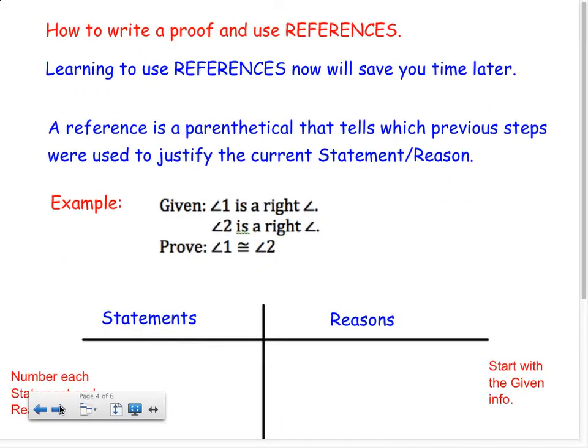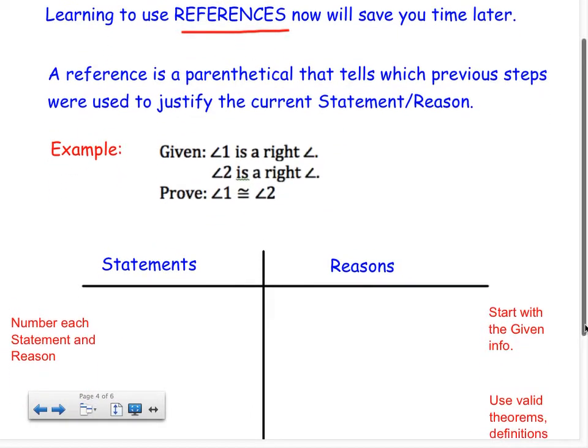So, here's how we're going to write a proof, and I'm going to show you how to use references that will save you time later. Your textbook doesn't get into references until we get into triangle congruences, but I want to introduce them now, so that you'll get used to using them. A reference is a parenthetical that tells which previous steps were used to justify the current statement or reason. So, I'll show you an example.